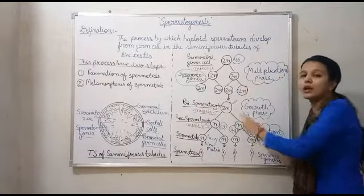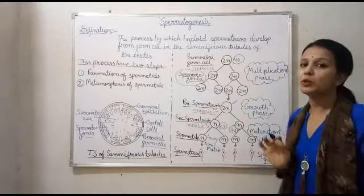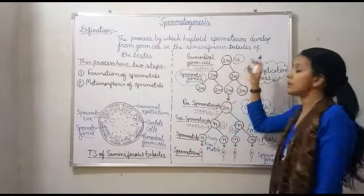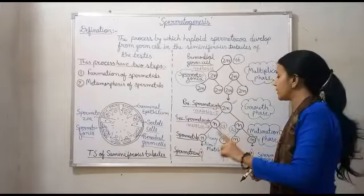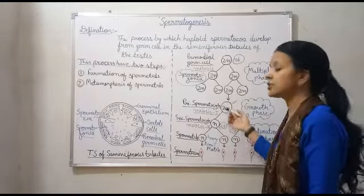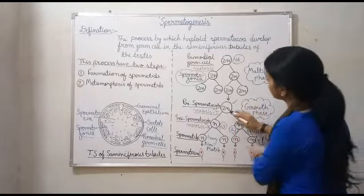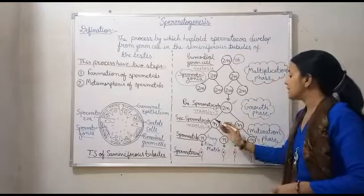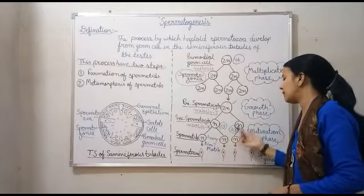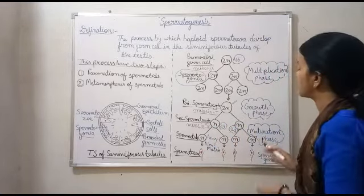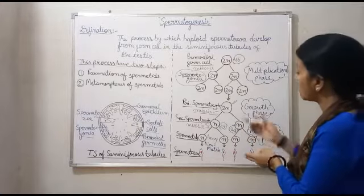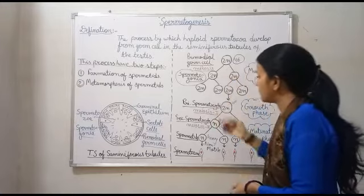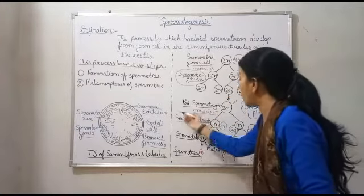Primary spermatocyte में अब meiotic division होगा। Meiotic division क्यों होगा? क्योंकि अब इसके अंदर chromosome number half होगा। First meiotic division will always be a reductional division। तो 2N से N बन गया — 46 chromosomes थे, यहाँ 23 और यहाँ 23 हो गए। Primary spermatocyte जब divide होती है meiotic division के through, तो secondary spermatocyte को form करती है। Primary spermatocyte is diploid, and after division, secondary spermatocyte हaploid होगी।